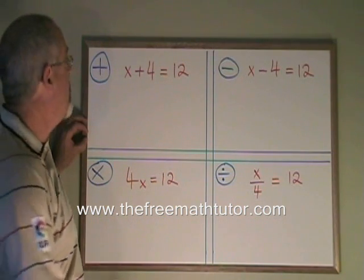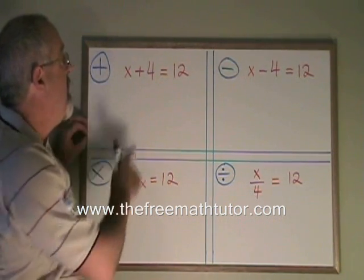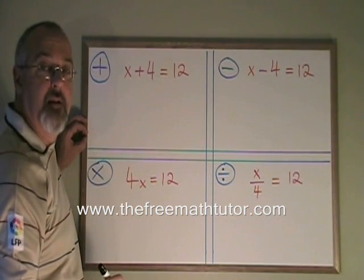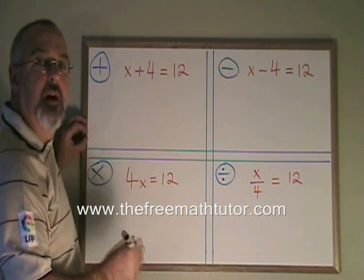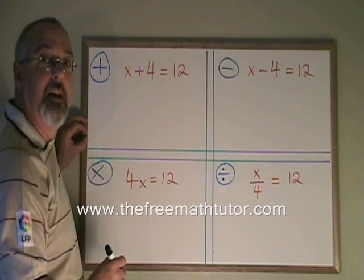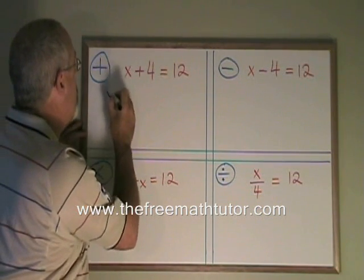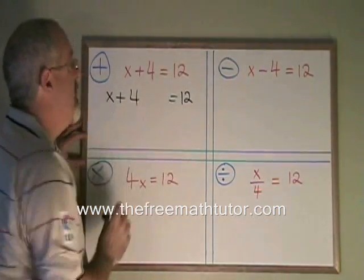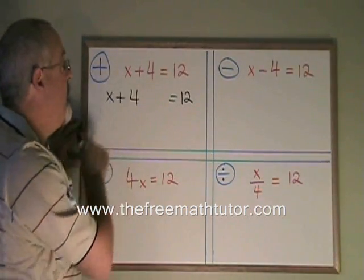Let's look at the first example, which is addition. Here our x has a 4 with it. The 4 is being added to the x. How do I get the 4 away from the x so that the x can be alone? What I do is I do the opposite of adding 4.